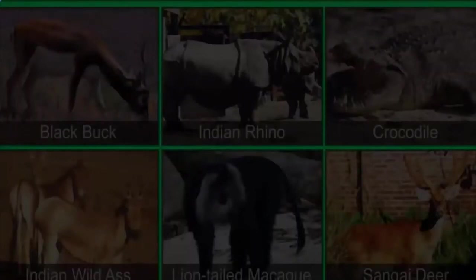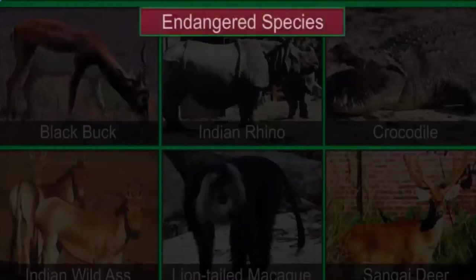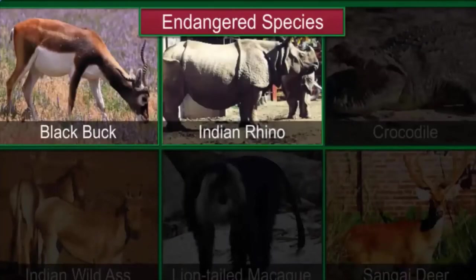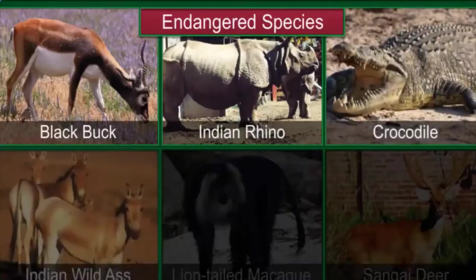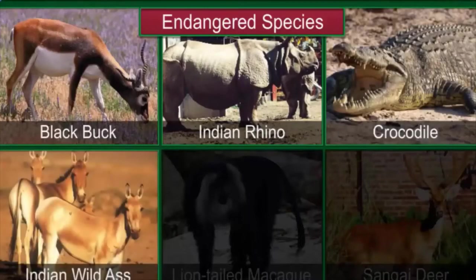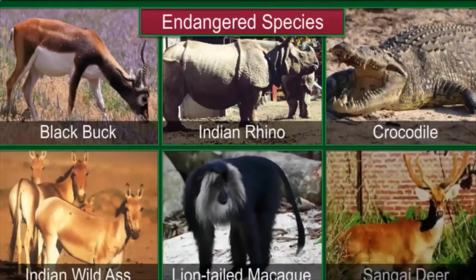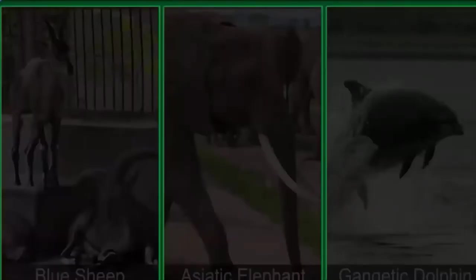A species that is facing the danger of extinction if the factors responsible for its decline are not checked is called an endangered species. For example, the black buck, Indian rhino, crocodile, Indian wild ass, lion-tailed macaque, and the Sangai deer.